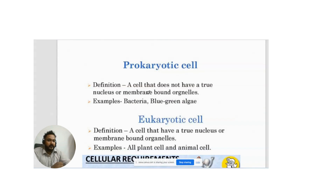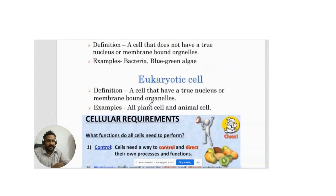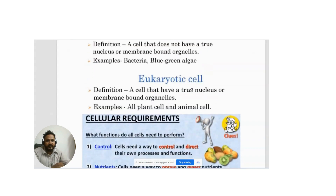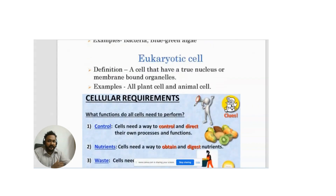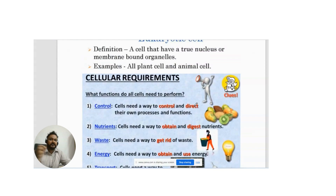Examples of prokaryotic cells are bacteria and blue-green algae. Eukaryotic cells are defined as cells that have a true nucleus and membrane-bound organelles. All plant cells and animal cells are eukaryotic.